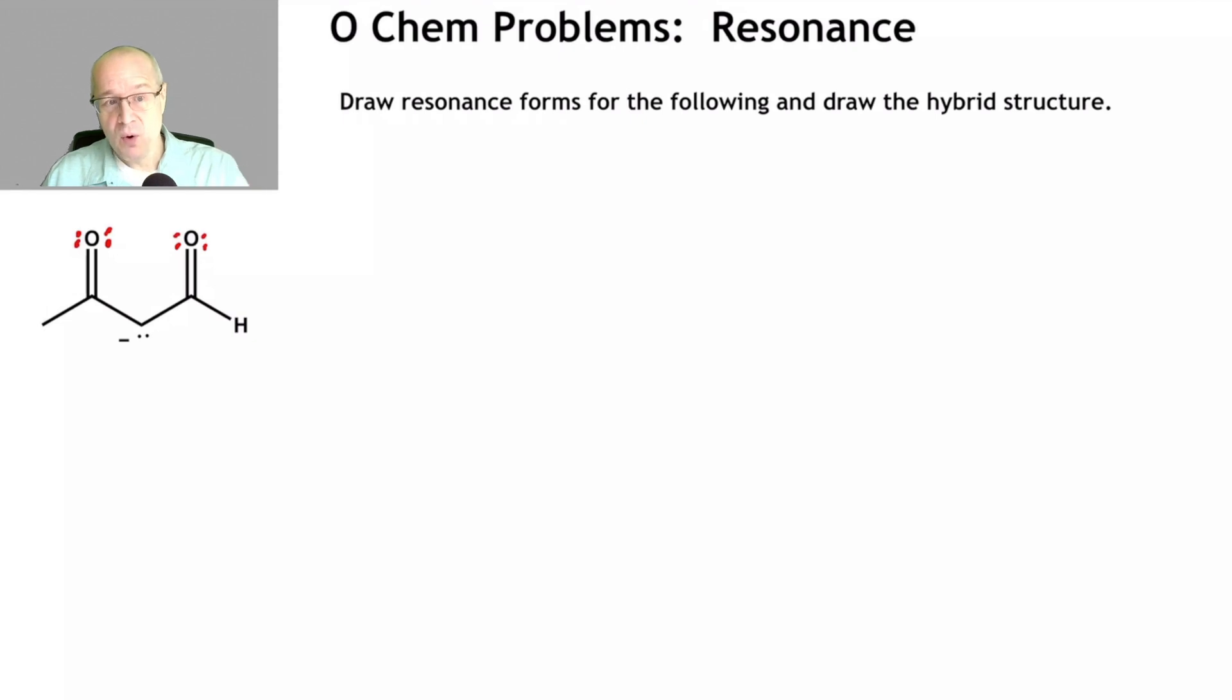Do not draw more than one set of arrows on a structure. You're going to see what I mean in a minute, but just make it neat. Organic chemistry professors like things to be neat because we can see it, we can see what you're getting at. If you draw too much on one drawing, it gets messy. We can't see where you're going with it and we'll probably give you zero. So don't be messy.